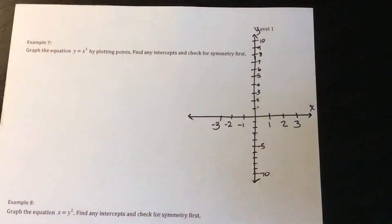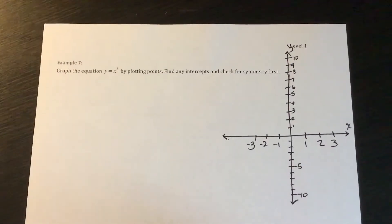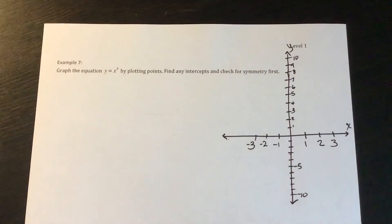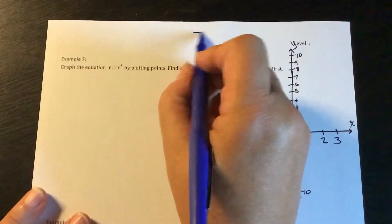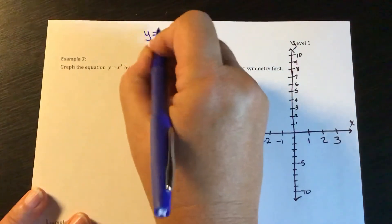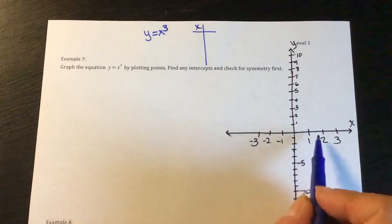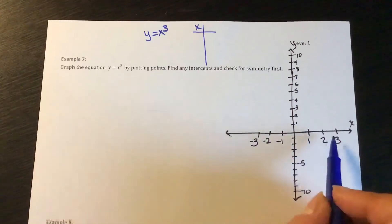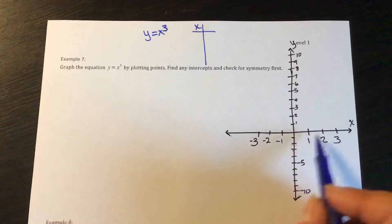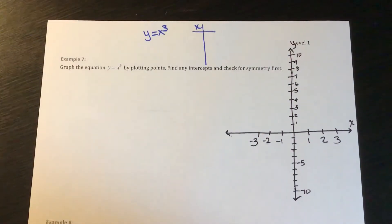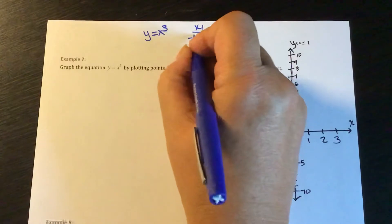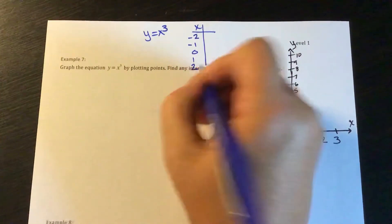We're going to do another one. Here we have: graph the equation y equals x to the third power by plotting points. So let's come up with some points for y equals x cubed. When we're graphing points, I need some x values. We want to look on both sides of the y-axis, so I need some negative x values, some positive x values, and we always want to check 0. So let's try negative 2, negative 1, 0, 1, and 2.